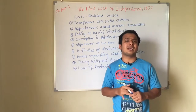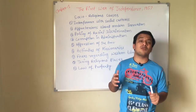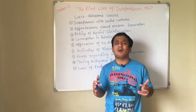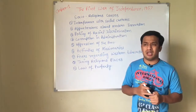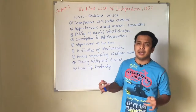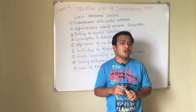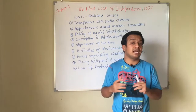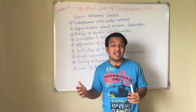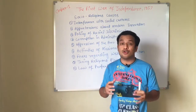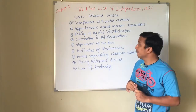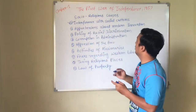Although abolition of Sati was a social reform, the people were not happy with the abolition. Also, opening of western education to the girl child was not welcomed by the Indians. As a result, Britishers felt alienated from the masses, just because Indians felt that they were directly interfering in their social and religious matters.